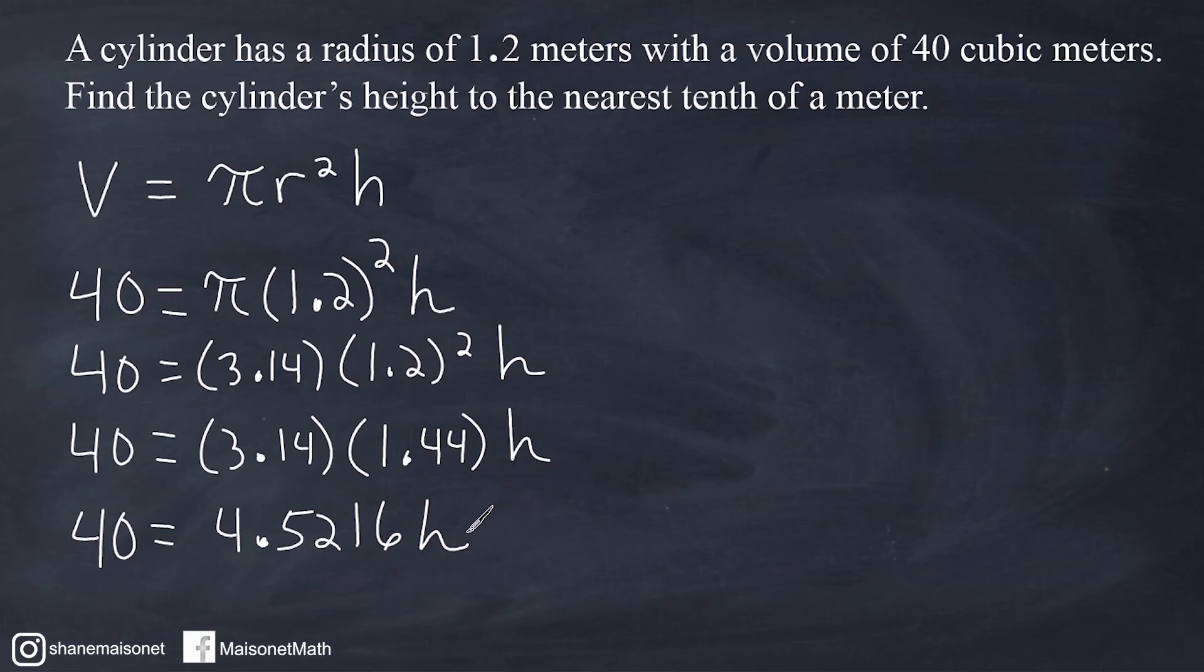We have one step left and that is to get h by itself. How we do that is to understand that this value directly in front of h is our coefficient. To get rid of that coefficient, you always divide that coefficient not only by itself on one side, because that's going to turn it into 1, which leaves us with 1h, which is our goal. But we have to balance our equation and divide the other side by that value as well.